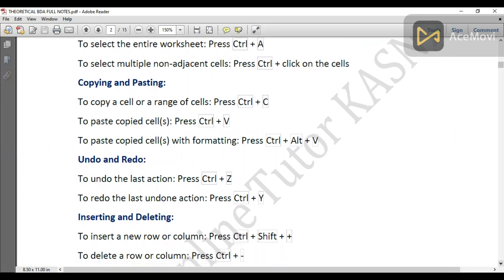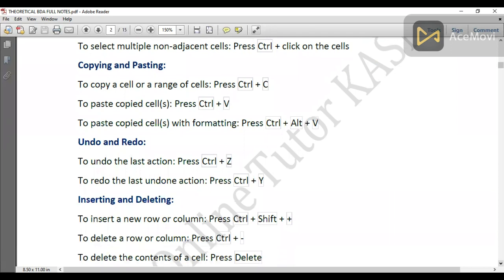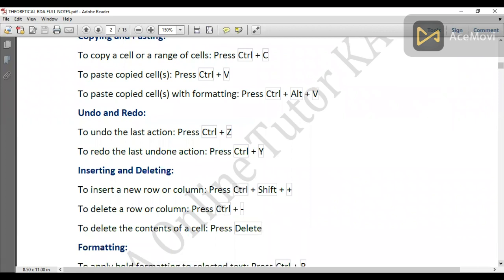For inserting and deleting cells: to insert a column or row, first select it using the shortcuts mentioned, then press Ctrl + Shift + Plus. To delete, use Ctrl + Minus. To delete all content in a cell, just press Delete.